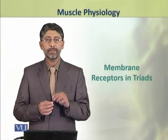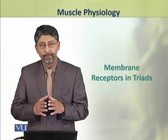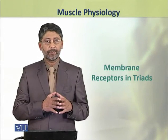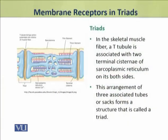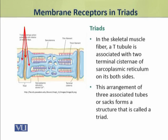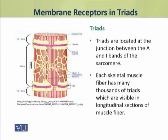In this topic we shall discuss what are triads and the membrane receptors in these triads. In a skeletal muscle fiber, a T-tubule is associated with two terminal cisternae of sarcoplasmic reticulum on both its sides. These triads are located at the junction between A and I bands of sarcomere.